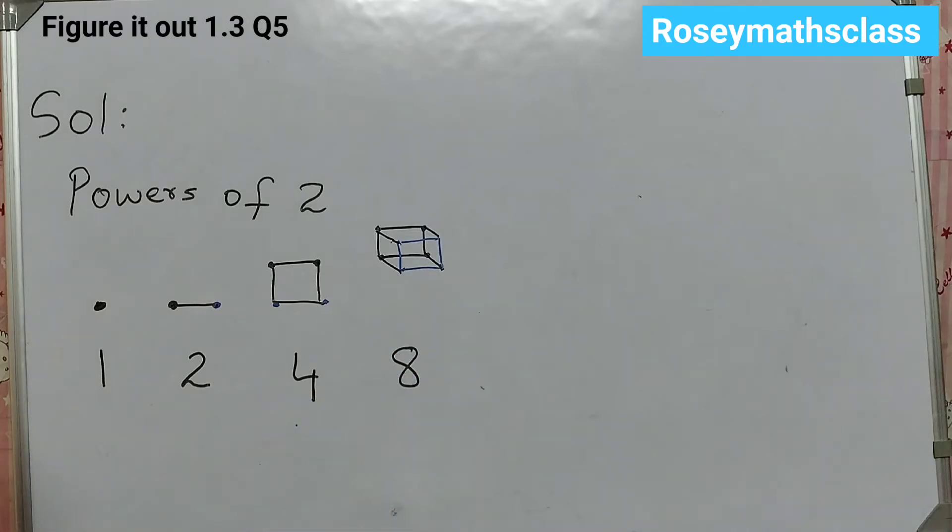So in total, there are 8 dots. 1, 2, 3, 4, 5, 6, 7, 8.